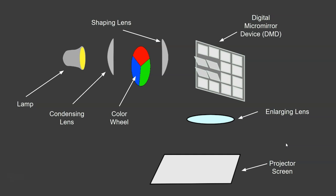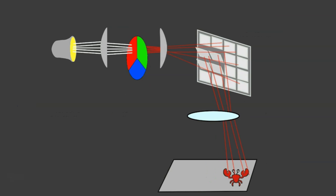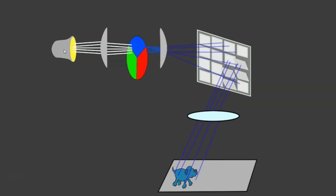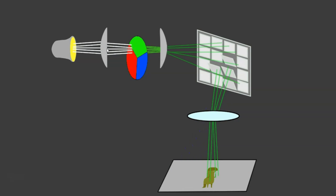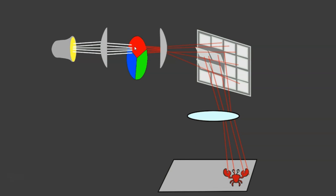So here you can see you've got the lamp, and the lamp shines out a white light. It goes through the first lens and gets directed through the color wheel.